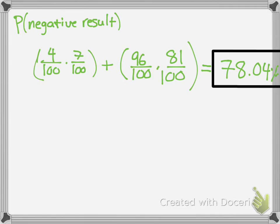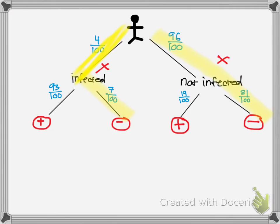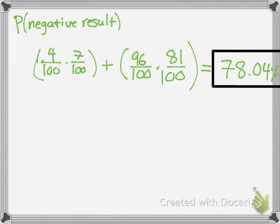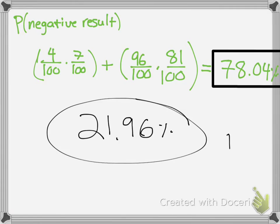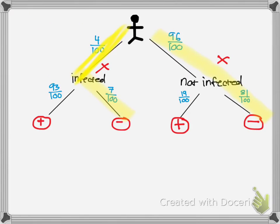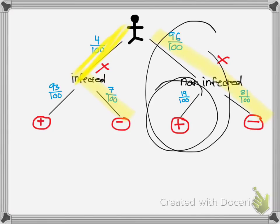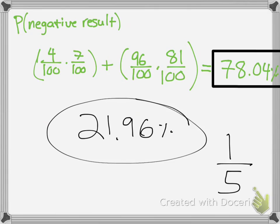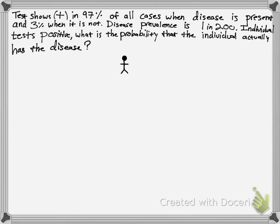Let's think about this for a moment. The opposite — the probability of getting a positive result — would be 100 minus 78.04%, which is 21.96%. So you're going to get a positive result nearly over a fifth of the time. This is bad — you're getting a lot of false positives. This test is not really a good one. What you would do to improve your odds would be to take the test twice. If it comes back positive, then the person is more certain to have the disease.